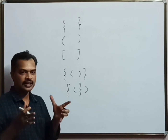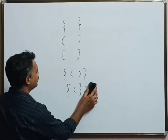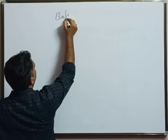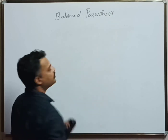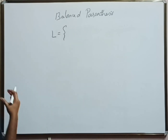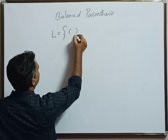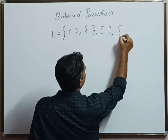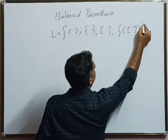So I hope you got an idea regarding what balanced parentheses is. Now let us design a CFG to accept the same. Let us identify the language set — what are the possible parentheses that can be produced or accepted by the CFG we are going to design. It can be various combinations of brackets, and so on.